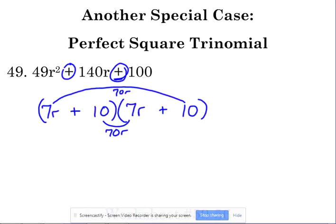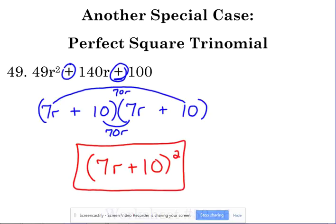Now here's what you have to do. Because they are exactly the same thing, this is how that answer would show up on a multiple choice test. It would show up as (7r + 10)² because it's the exact same factor.